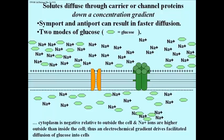So there it is. Cytoplasm is negative relative to the outside of the cell and the sodium ions are higher in concentration outside the cell than inside, which is a great setup for this electrochemical gradient to force facilitated diffusion of glucose into cells.